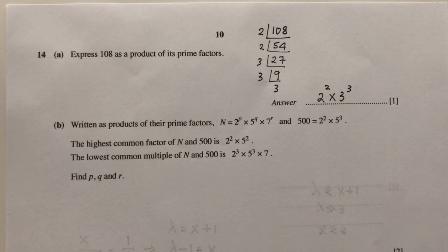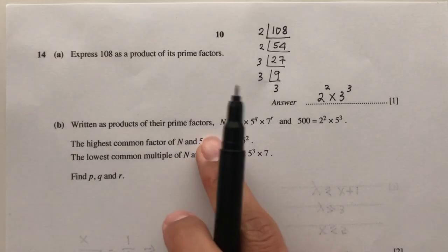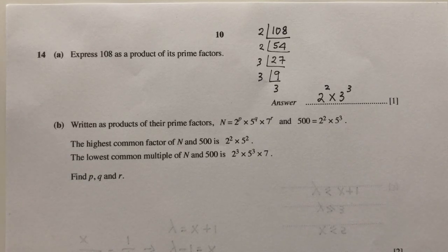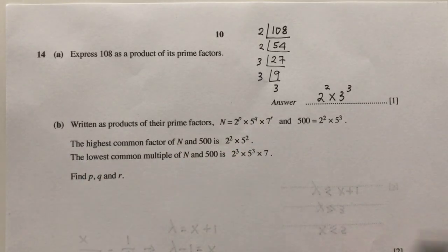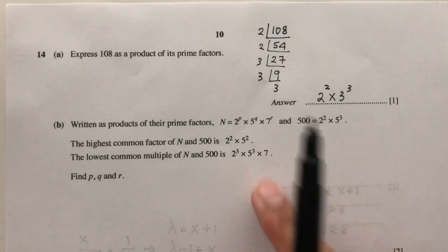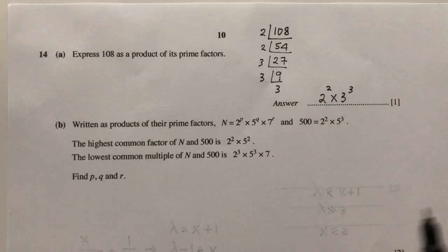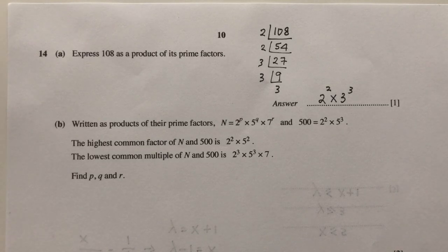Now for part B, written as products of their prime factors, we have two numbers N and 500. Now the HCF has been given to you by this one and the LCM has been given to you by this. So we have to use this to find the values of P, Q, and R.